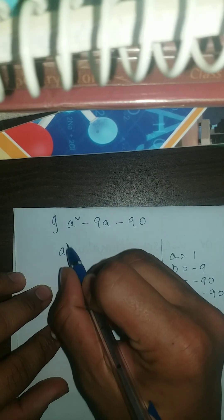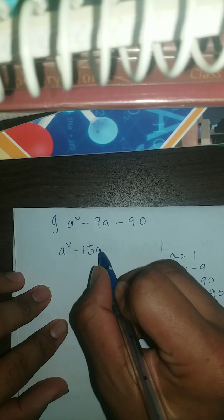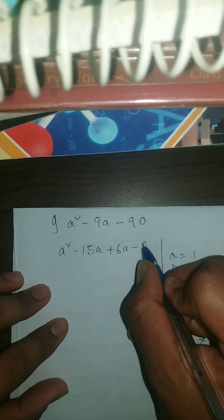And after subtracting them, we're gonna get minus 9 also. So yeah, before our number, we're gonna write here a square minus 15a plus 6a minus 90.